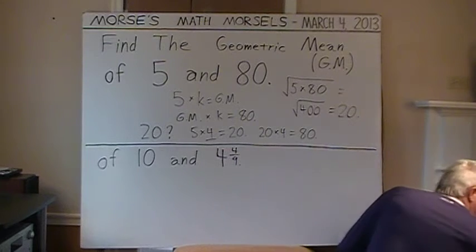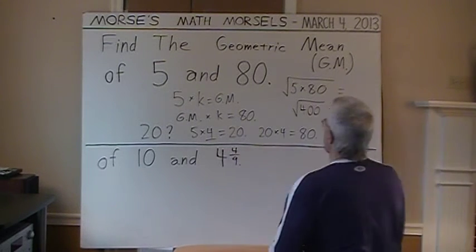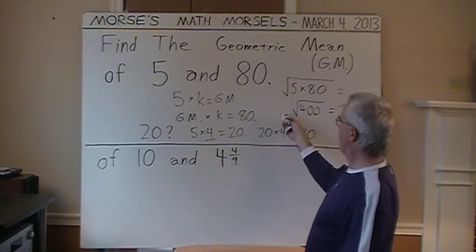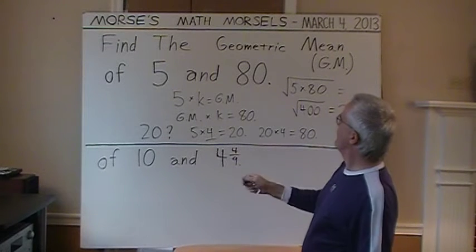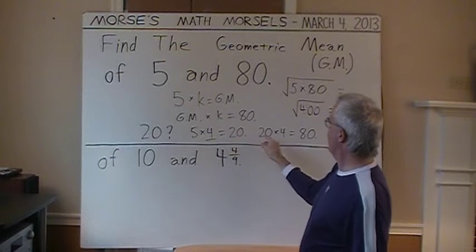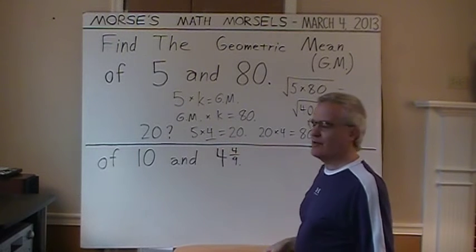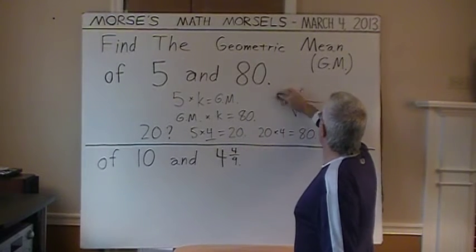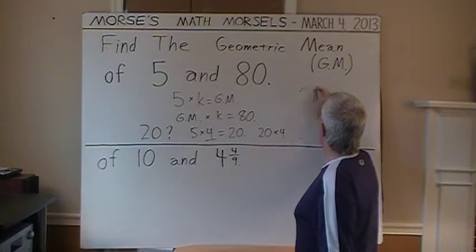And there's another method. If you use a proportion. I'm just going to leave that on here for a few more seconds. Geometric mean. 5 times 4 is 20. 20 times 4 is 80, to quickly rehash. And another method, proportion.